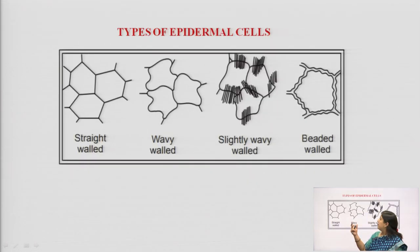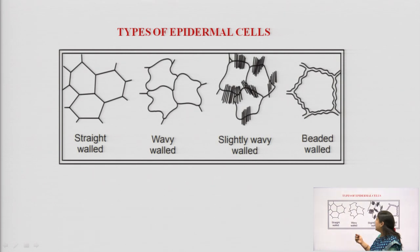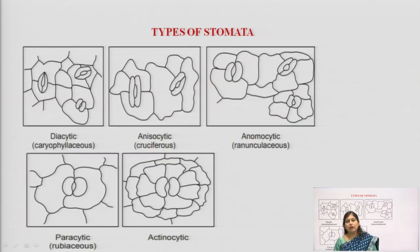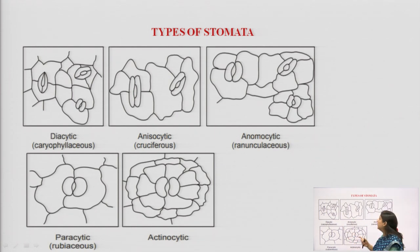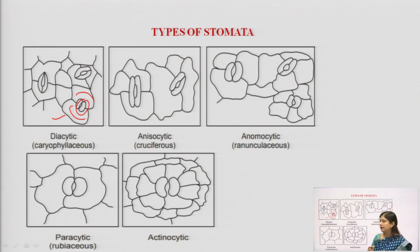Looking at epidermal cells: in any part of the plant they can be of different types. The four major types are straight-walled, wavy-walled, slightly wavy-walled, or beaded-walled epidermal cells. Regarding types of stomata: diacytic stomata are divided at a 90-degree angle by the subsidiary cells.